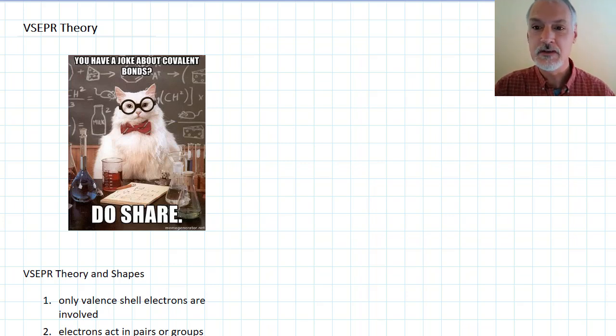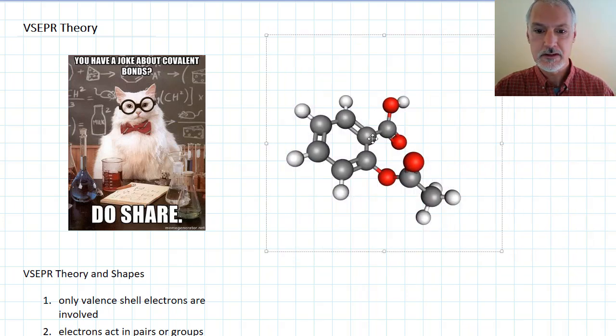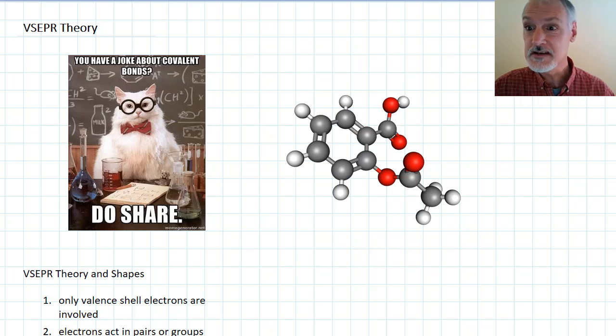This program is now a continuation of a look at from our Lewis dot diagram into what determines the shape of a molecule. I'm going to start by sharing with you a sketch of what scientists at least believe the aspirin molecule looks like.